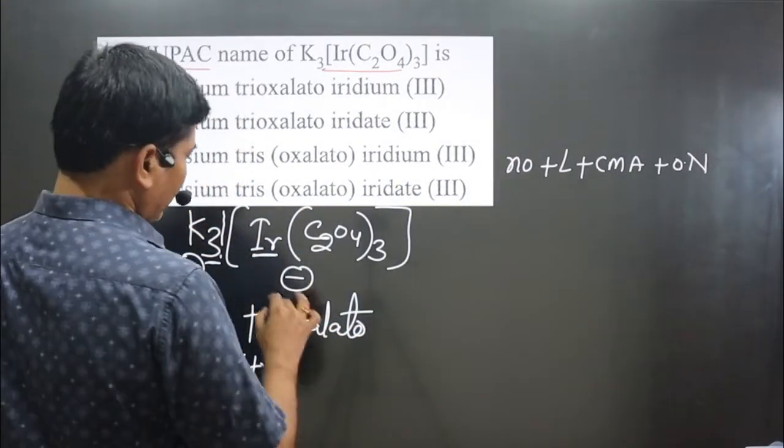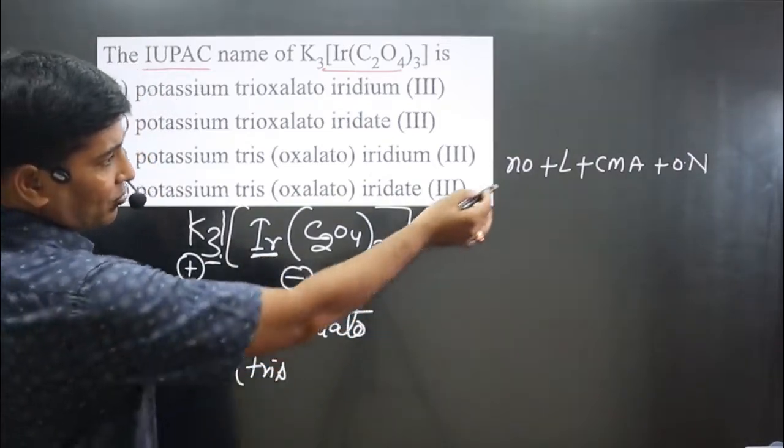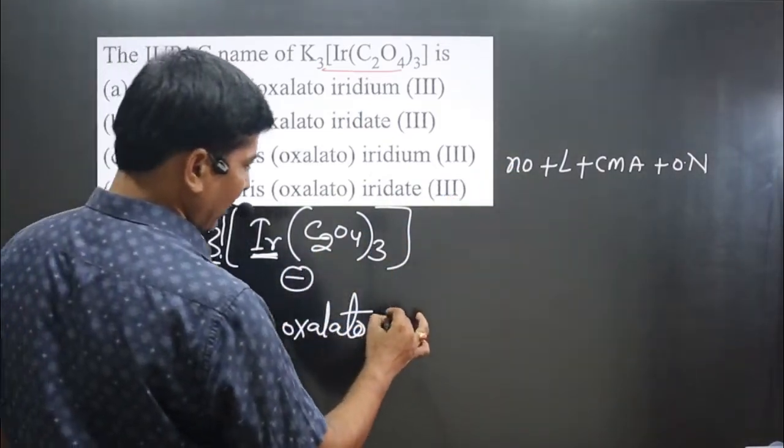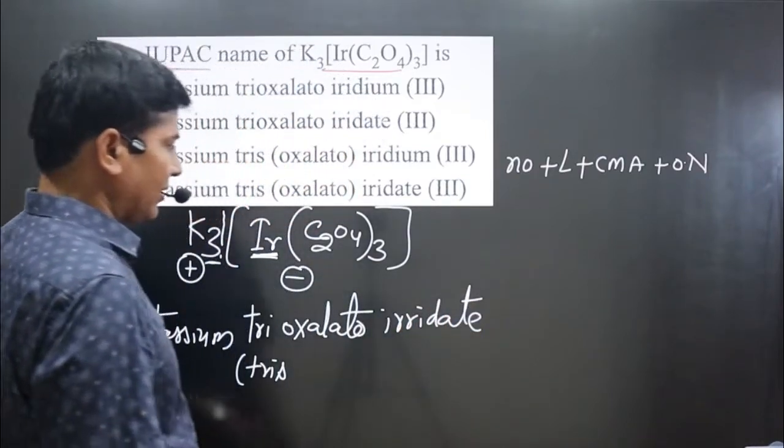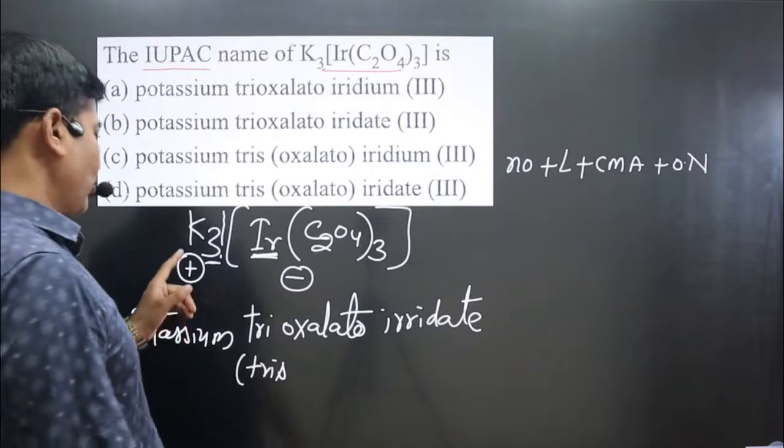Then it will become the central metal atom we have to write. This is present in the anionic portion, then we write iridate. Iridate is there. Then we calculate oxidation numbers.